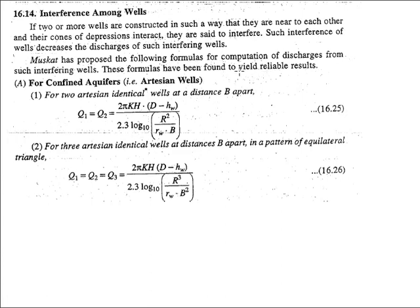Musket has proposed formulas to compute the discharge in cases where we have interfering wells. For confined aquifer or artesian wells, in the first case if we have two artesian identical wells at a distance b apart, then the discharge of the individual wells is given by his formula.